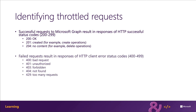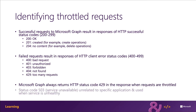Error status codes are in the ranges of 400 to 499, and also sometimes 500s. Common failed status codes include 400 for a bad request, 401 and 403 for permissions or authentication errors, 404 meaning not found, and 503 for service unavailable.